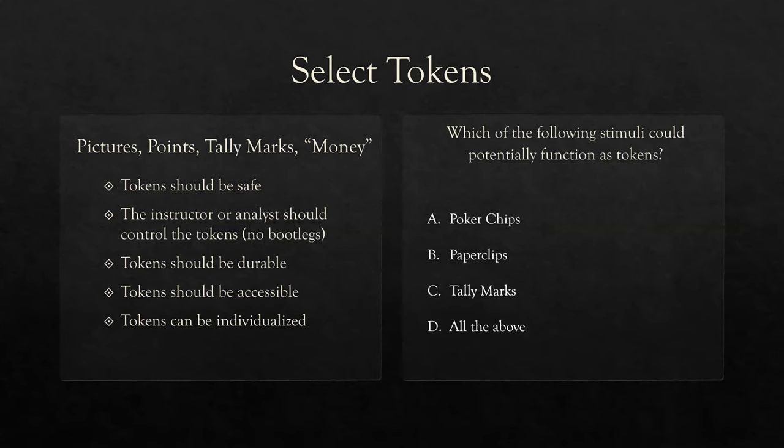Which stimuli could potentially function as tokens? As long as they're safe, durable, accessible, and not easily bootlegged, you can choose virtually anything. Poker chips? Sure — they're real-life tokens exchanged for value. Paperclips? Sure, they're usable. Tally marks are very common, especially in group systems. The answer is D — all of the above. You can use virtually anything as a token as long as it follows these basic guidelines. Most importantly, be individualistic and be safe.